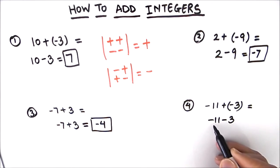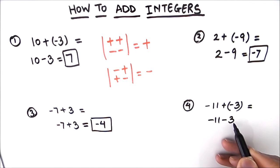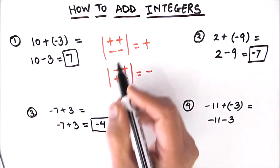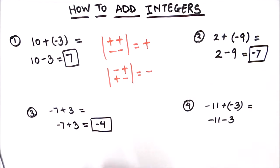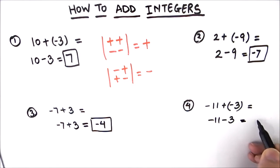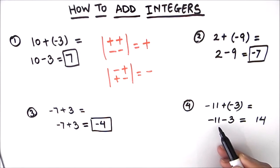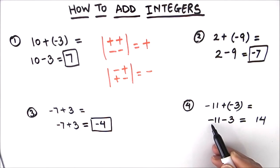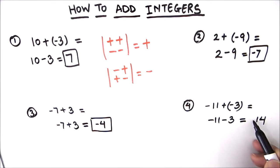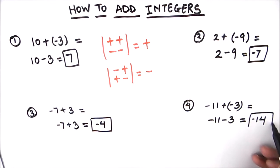Now we have two negative numbers: negative 11 and negative 3. When the signs are the same, we add the two numbers, so that's 14. The sign of the answer will be the sign of the bigger number — 11 is bigger than 3 and the sign of 11 is negative — so that's negative 14.